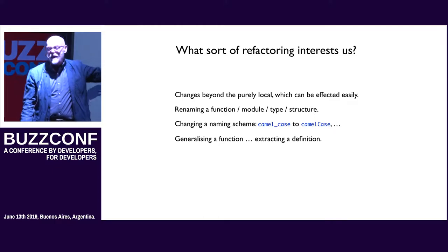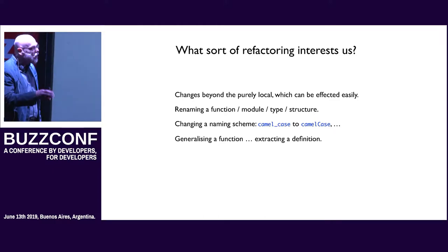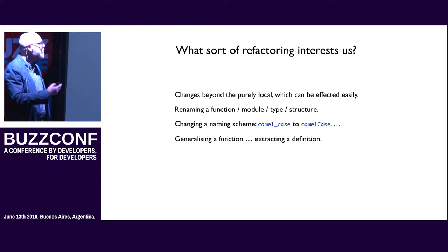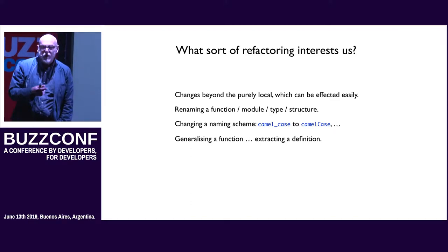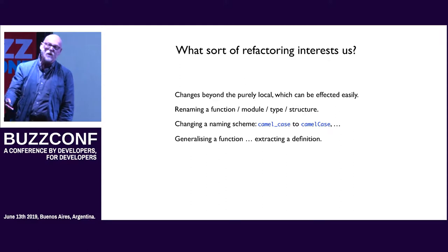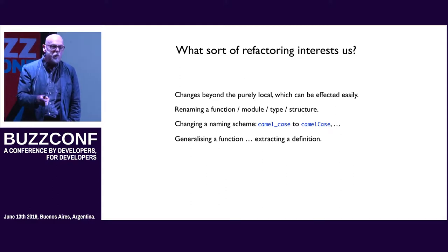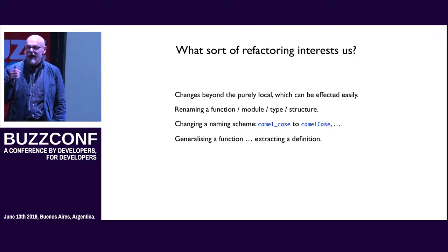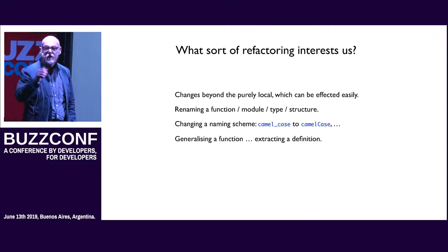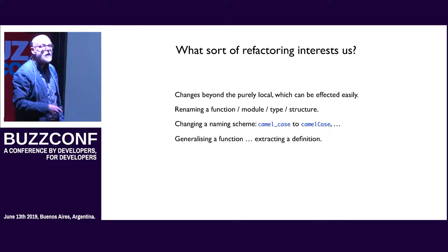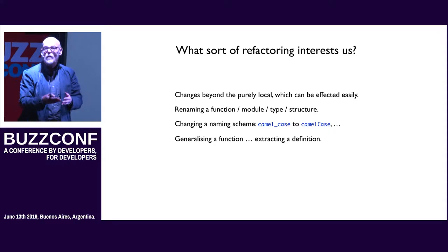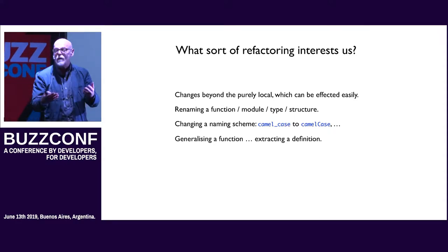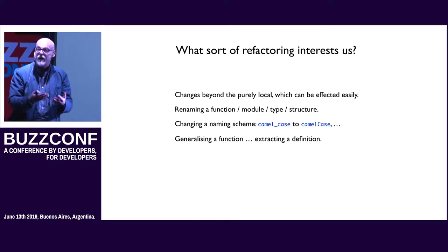That might be renaming a function — and I'll come back to this question of renaming through the talk. Renaming a function, a module, a type, a structure. We know how important naming is. If you take a program and replace all the names with random strings, you'll find it very difficult to understand what the program does. We give meaningful names to things because those things help us to understand the program. You might also want to take a whole project and move from one naming style to another.